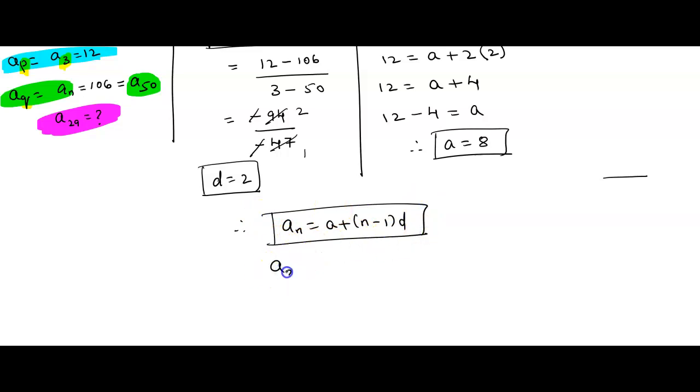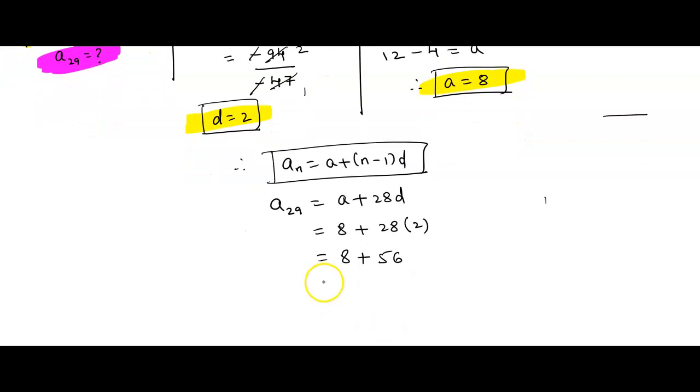We are finding A₂₉. A₂₉ equals A plus (29-1) is 28D. So the value of A is 8 plus 28 times the value of D is 2. We can see here, we have just found value of A and value of D, that is what we are substituting here. Then, 8 plus 28 times 2, 8 times 2 is 16, 2 times 4 plus 1 is 5, that is 56. Then, 56 plus 8 is 64. So the 29th term value is 64. This is the solution for this problem.